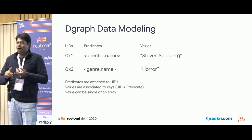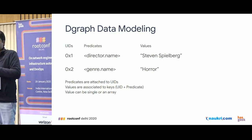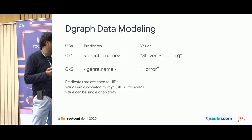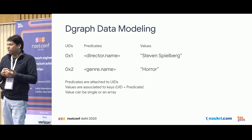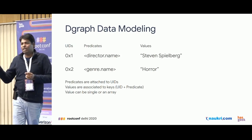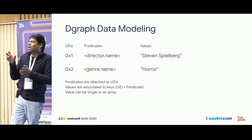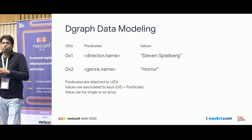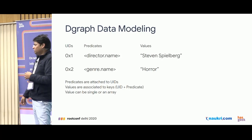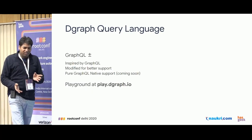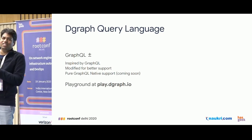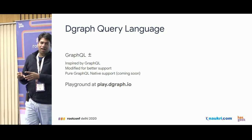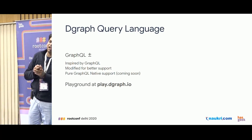Data modeling in DGraph uses UIDs which are generated automatically — you have no control over them. You define predicates, which are the keys for your specific values. For example, UID 0x1 has a predicate called director.name with the value Stephen. The combination of UID and predicate becomes the key for the graph engine storage. Values can be single or multiple — you can store an array of data to one single predicate. We needed a query language to handle the recursive nature of graphs, and we ended up using GraphQL as the basis.